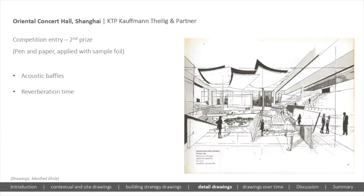It's not just about drawing environmental strategies through technical sections — you can also use perspectives to convey that level of detail. For example, this competition entry for the Oriental Concert Hall in Shanghai: those large acoustic rafts feature strongly in the image, really helping to define the space. They're part of an acoustic strategy, but when you look at the perspective of this space, they're also clearly part of an architectural strategy as well.